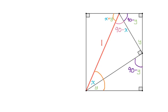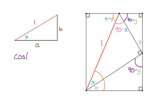I've copied over all the angles that we found. Now I'm going to focus on the middle triangle. It has an angle of x and a hypotenuse of one. I'm going to call the sides A and B. The cosine of angle x is adjacent, which is A, over hypotenuse, which is one. The sine of x is opposite, which is B, over one. So A is just the cosine of x, and B is just the sine of x.